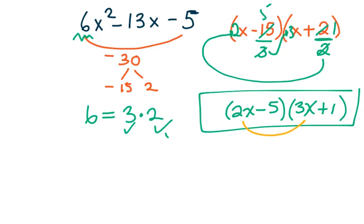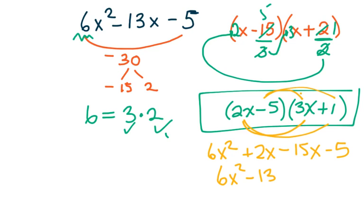So 2x times 3x is 6x squared. 2x times 1 is just 2x. Negative 5 times 3 is negative 15x. And we're going to finish there. So this is the best way you know if you're getting the right factorization.